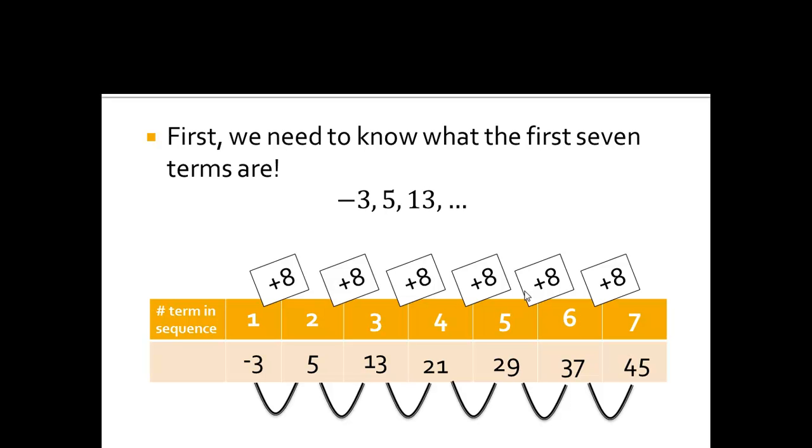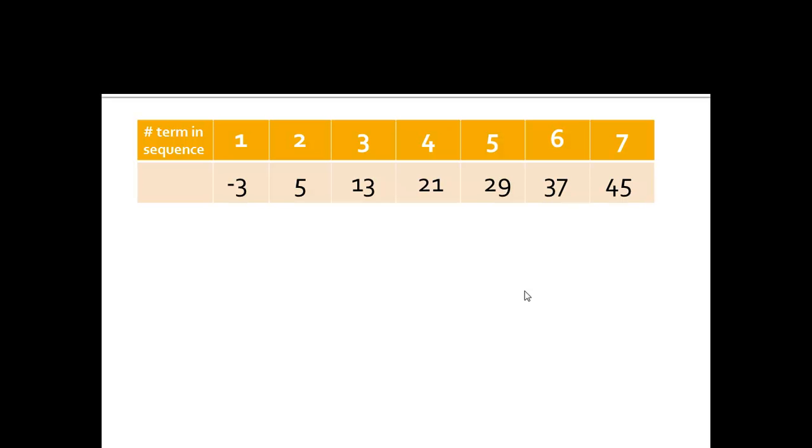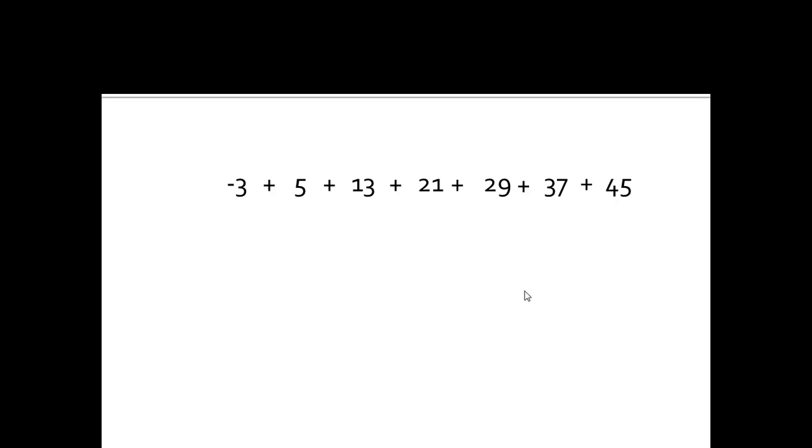So what I'm going to do in a series is I'm going to take these first seven terms, and I'm going to sum them together. So I'm going to take these first seven terms, and I'm going to add them together, and I get 147.